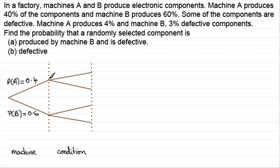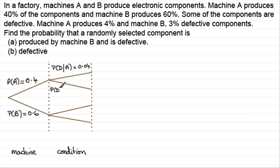Then depending on the machine you had, we either produce defective items or not. When you write in here the probability of D — D for defective — try not to just write P(D). It's dependent on what machine it came from, so it's the probability of being defective given that it came from machine A. That probability is 4% or 0.04. Similarly, we must have the probability that it's not defective, given that it came from machine A — and we know these should total one, so that leaves us with 0.96.